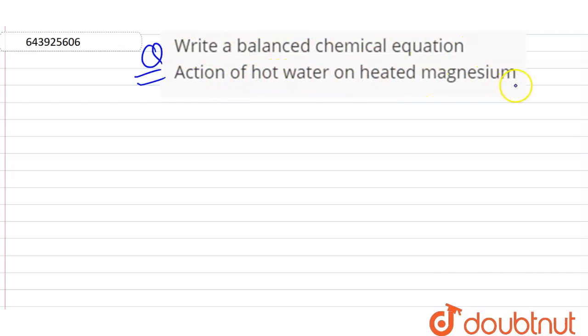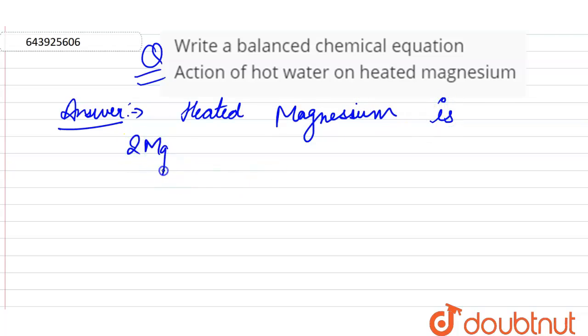Heated magnesium is 2Mg plus O2 gives rise to 2MgO, that is magnesium oxide.